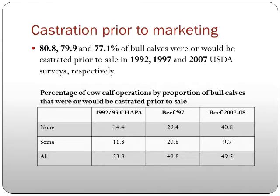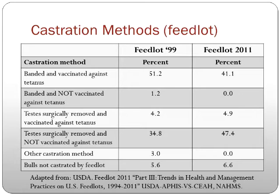How many of you are castrating your bull calves? These are a series of USDA surveys — one in 1992, one in 1997, and one more recently in 2007–2008. These show basically the percentage of bull calves coming to market. The interesting thing to me is that it has relatively stayed the same, if not increased, as far as the number of bull calves coming to market. We're not really changing our practices much over the years.